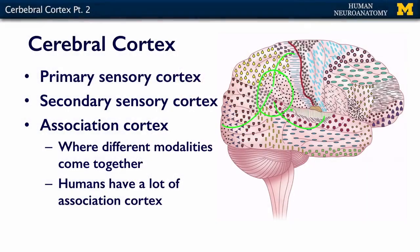You learn what a dog feels like, you learn what a cat feels like — you learn all the sensory information that comes in, going through the primary cortex and up through these levels of cortex, and then you put it together and create an image of your external environment.